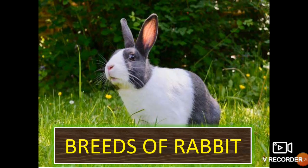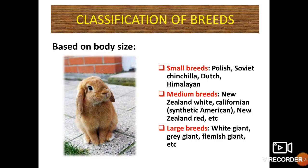Next, let's move to the breeds of rabbit. The breeds are classified into two groups. First, based on body size: smaller rabbits include Pols, Soviet Chinchilla, Dutch and Himalayan. Medium-sized breeds include New Zealand White, Californian, Synthetic American and New Zealand Red. And the larger breeds include White Giant, Grey Giant and Flemish Giant.